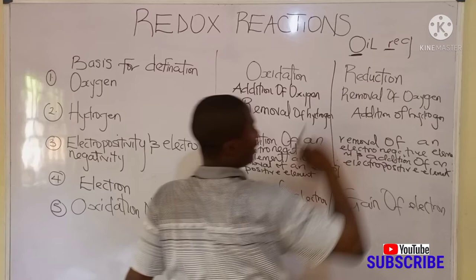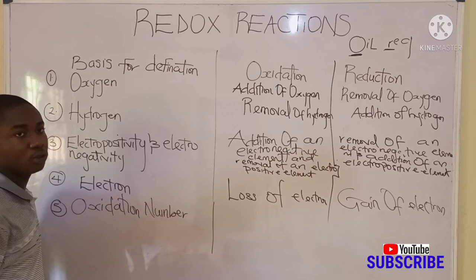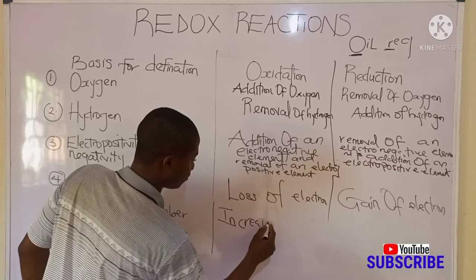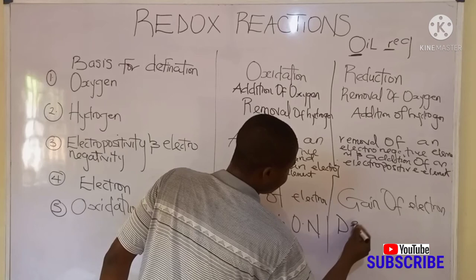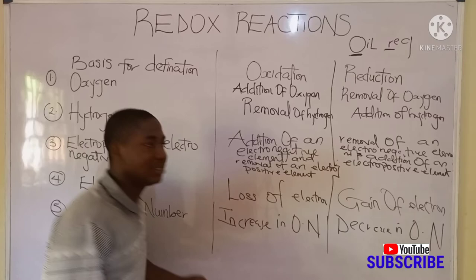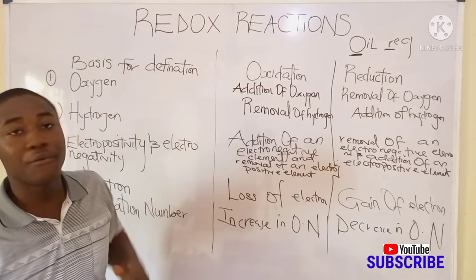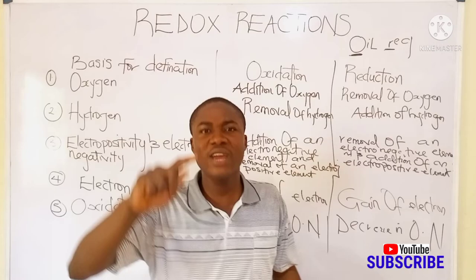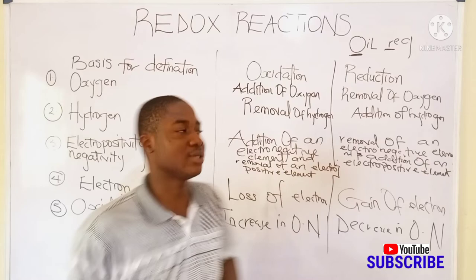Now, using oxidation number to explain oxidation, it is simply an increase in oxidation number, whereas reduction becomes a decrease in oxidation number. These are the bases for understanding redox reactions. To recall, a redox reaction is a reaction in which the oxidation and the reduction halves occur simultaneously.